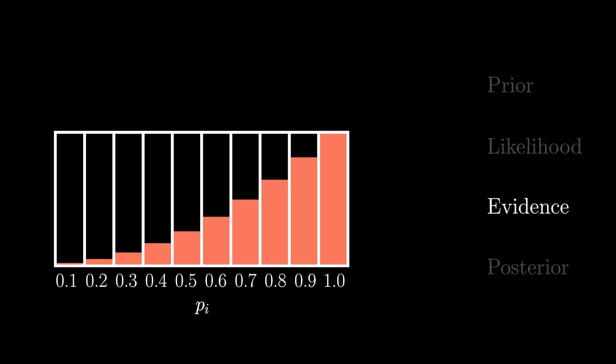Now, as there are 10 distinct parameter values that could have led to our evidence, the total probability of our evidence is the summation of the probability we would have observed our evidence for each value for p. This is the total red shaded area, which in this problem is 0.385.